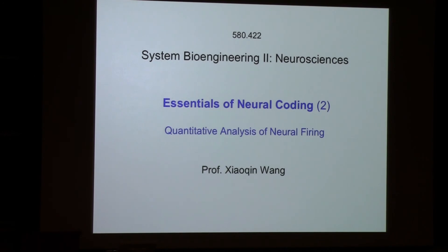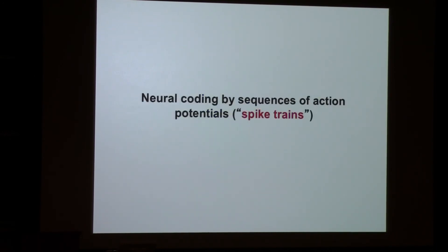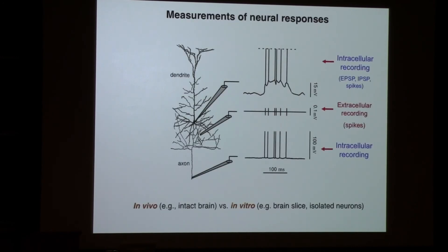The receptive field I described is very superficial — we will come back to it in many more lectures this semester. Here is the key point: we say you have a neuron somewhere in your brain — a sensory neuron, whether auditory, visual, or somatosensory — when you stimulate that sensory system, the neuron becomes excited, fires, or discharges. These all mean the same thing: the neuron generates action potentials, also called spikes. A sequence of action potentials is called a spike train. We will use these terms interchangeably.